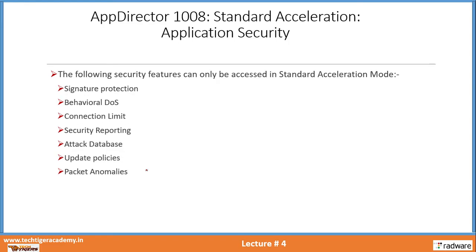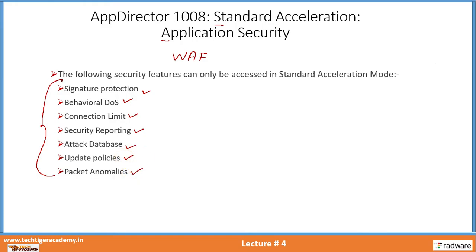Another feature in standard acceleration is application security — you can call it WAF, which is web application firewall. The protections available inside application security include: signature protection, behavioral DOS protection, connection limit protection, security reporting protection, attack database protection, update policies, and packet anomalies. All these are the protections you get inside the application security module.